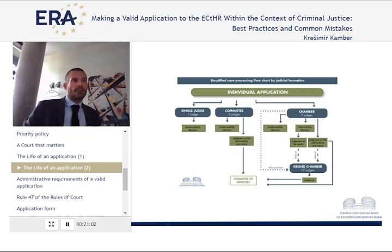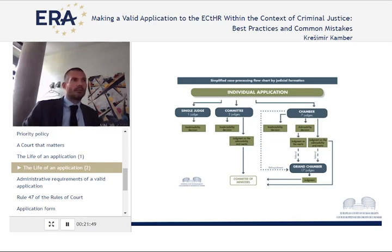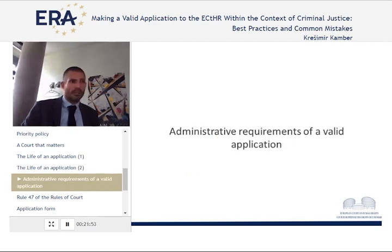In summary: single judges can only declare cases inadmissible. Committees may declare them inadmissible or find a judgment finding a violation, which goes to the Committee of Ministers for execution. A chamber can declare it inadmissible, adopt a judgment, or immediately relinquish the case to the grand chamber. The case may also end up in the grand chamber upon referral — though this is an exceptional procedure and should not be confused with a domestic-level appeal. The grand chamber only adopts a judgment, which is the final stage in the life of an application.